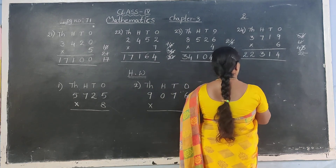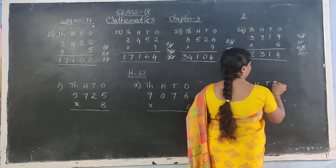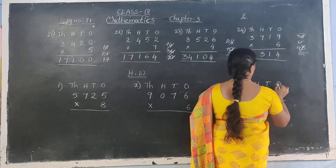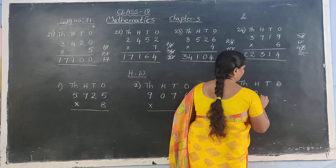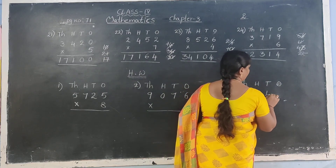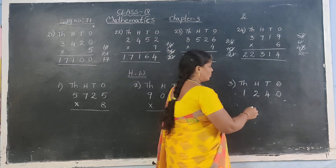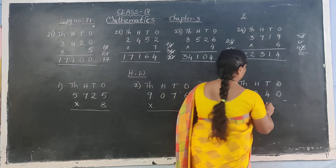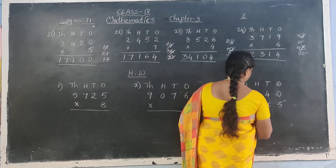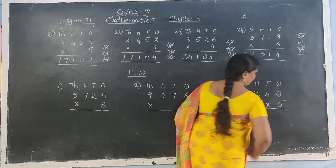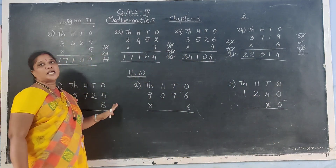Third sum: 1000s, 100s, 10s, 1s. 1,214 multiply with 5. Okay? These 3 sums, do them in your HW books.